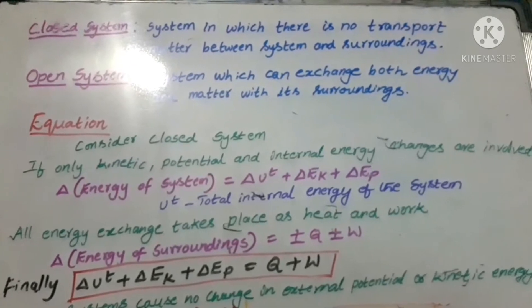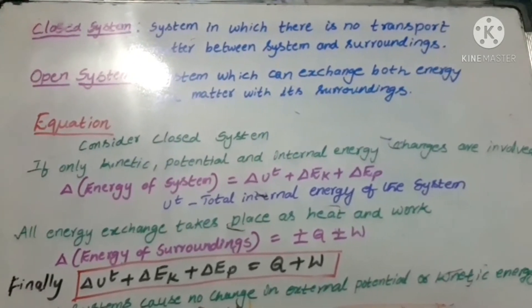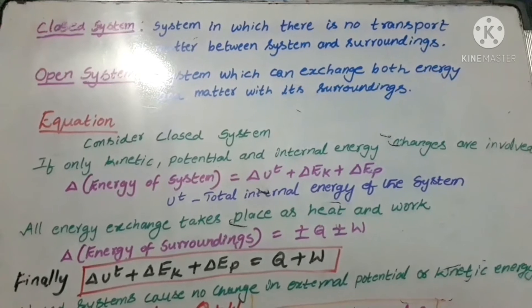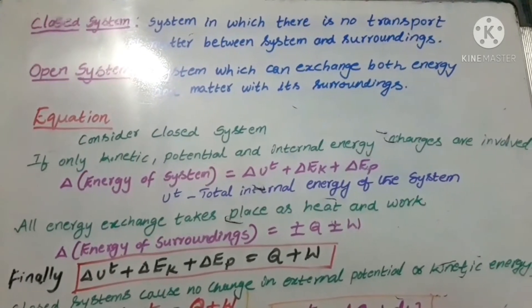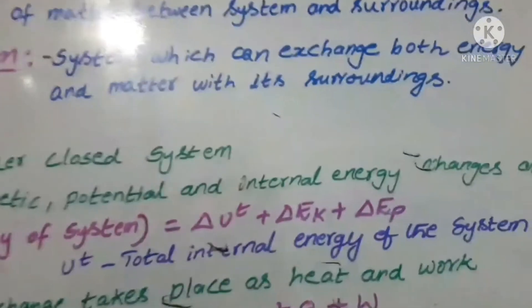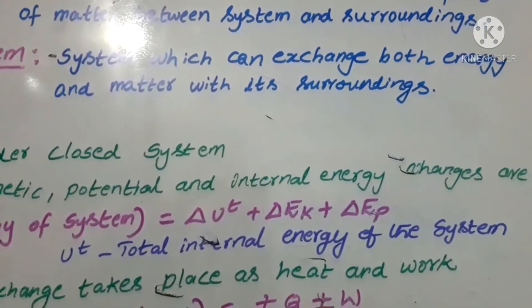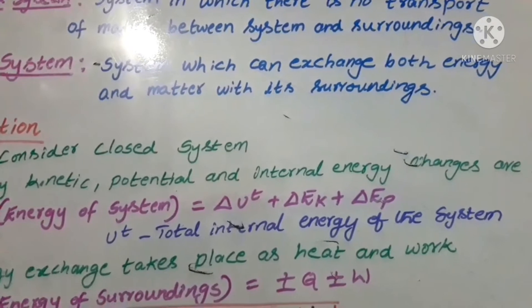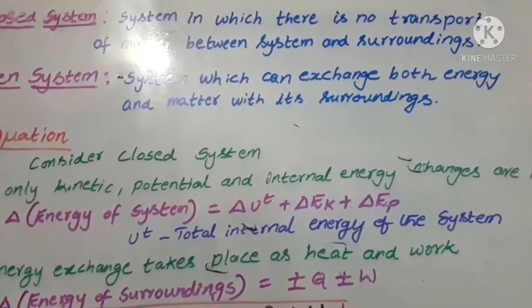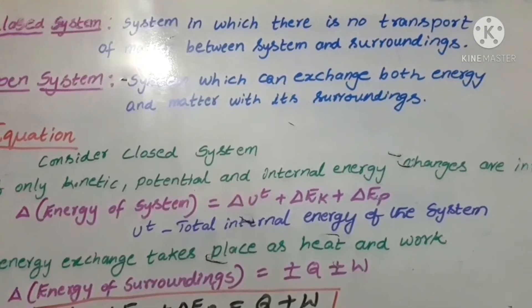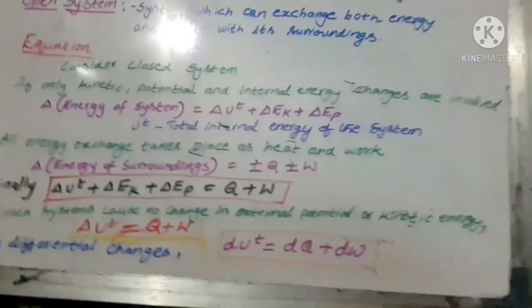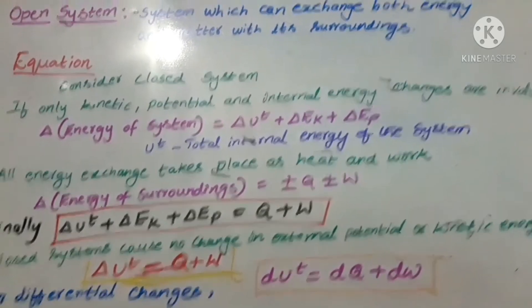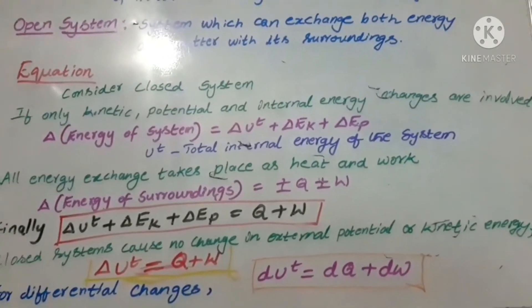We also consider two more definitions. A closed system is one in which there is no transport of matter between the system and surroundings — only energy exchange takes place. An open system is one which can exchange both energy and matter with its surroundings. Considering these two definitions, we will form an equation for the first law, starting with the closed system.